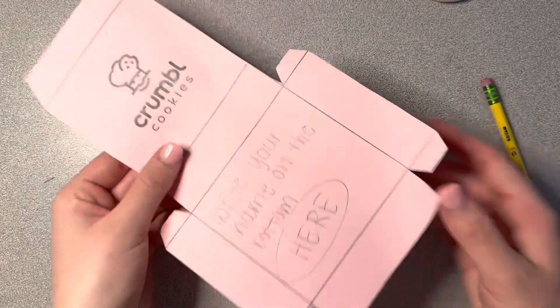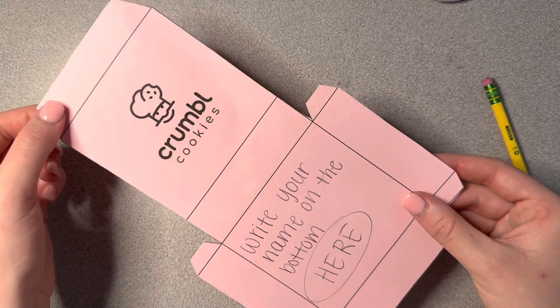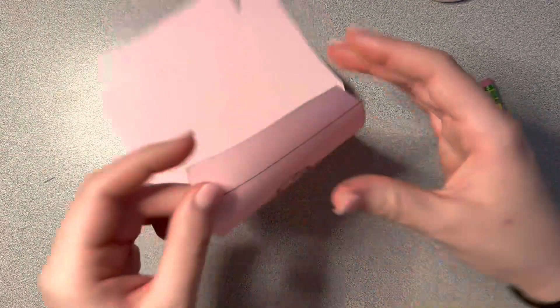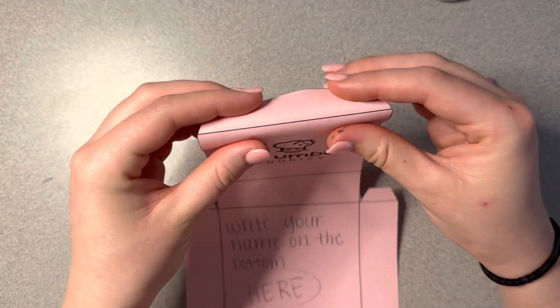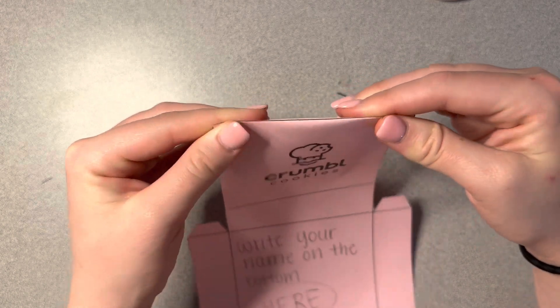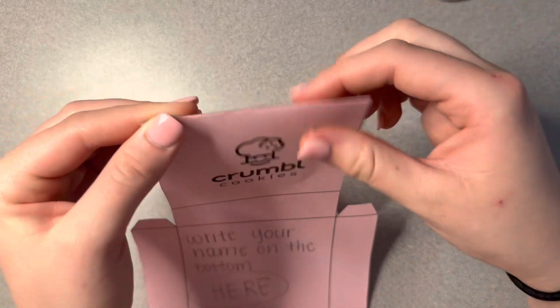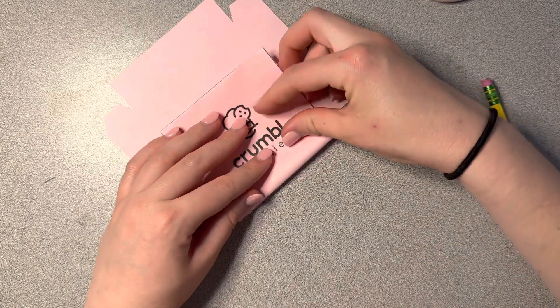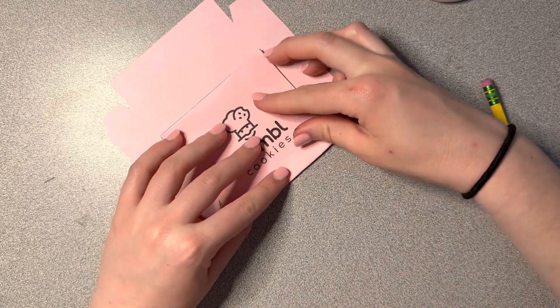And then once you have your little box cut out, you're going to fold on those lines and try and do it the best that you can. Go slow with this part. You'll get a better fold, and on every single line, make a fold.